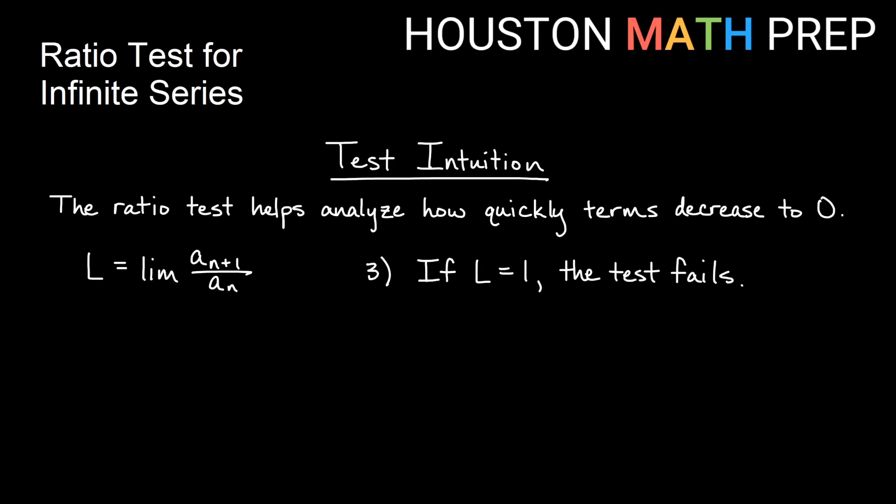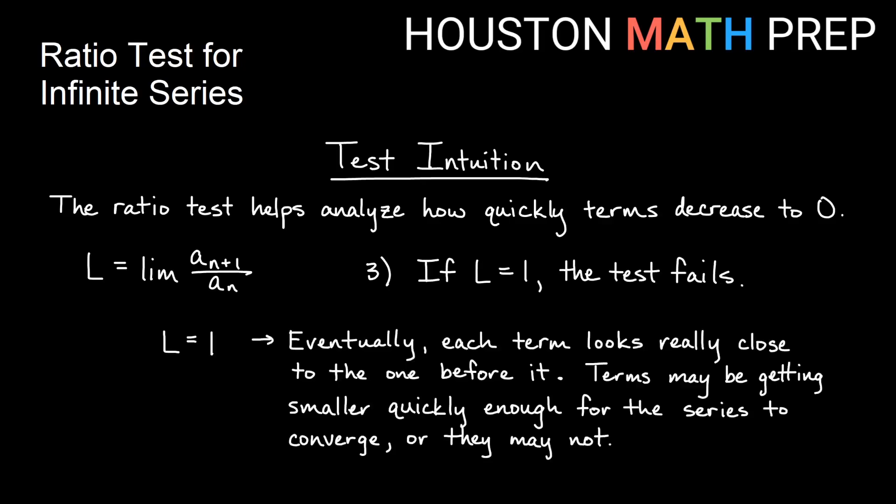If the limit is 1, the test fails — it doesn't tell us one way or another. The terms may be getting smaller quickly enough for convergence, or they may not. If we get L = 1, we'll have to use some other test for convergence or divergence.